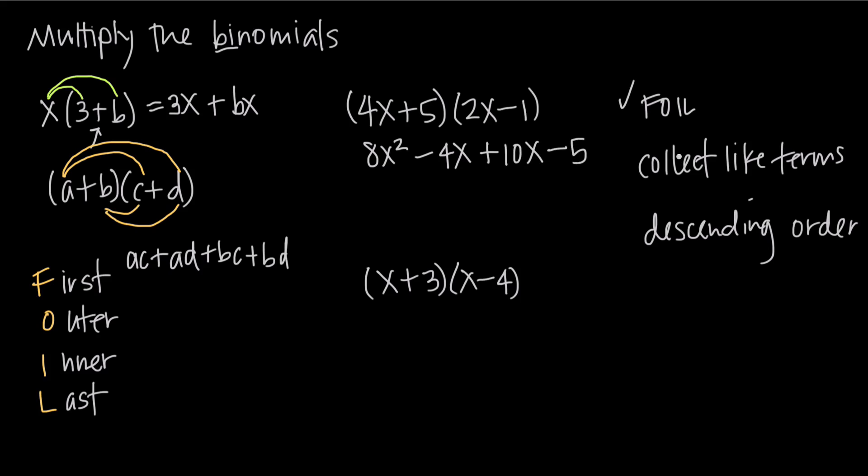Now we want to collect like terms, and if we see here, we have a negative 4x and a positive 10x, those are like terms. So adding those together, we're going to get a positive 6x, so then we say 8x squared plus 6x minus 5 is our final answer. The terms are already written in descending order because we start with the largest x squared, then we drop down to x to the first, and then we list the constant. So we're done here and done here.